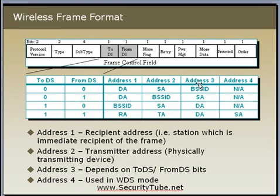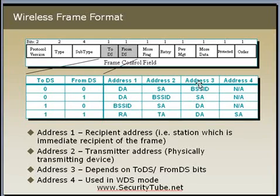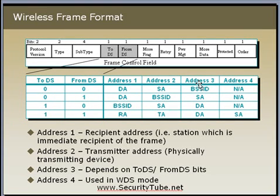In WDS mode, all four addresses are used. In most frames, only the first three addresses — Address 1, Address 2, and Address 3 — are used. Here is a simple trick: if a client is communicating with a server like www.google.com, the wireless MAC frame will contain three addresses — the client's address, the gateway's address (as the next hop), and the BSSID or access point's address — unlike a simple Ethernet frame which only has source and destination.